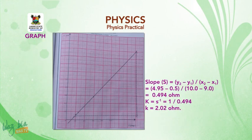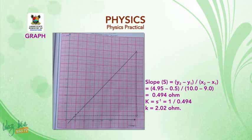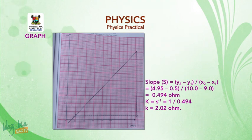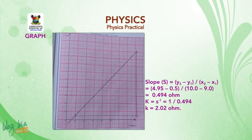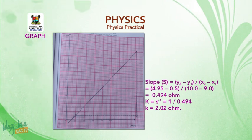Look at the graph on the screen. Slope = (Y₂ − Y₁) / (X₂ − X₁) = (4.95 − 0.5) / (10 − 9.0), which gives a slope of 0.494 ohms.